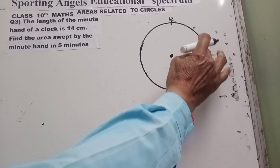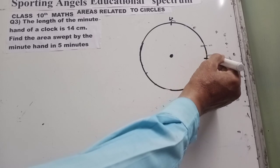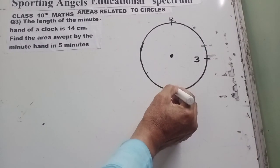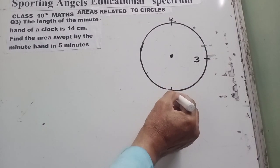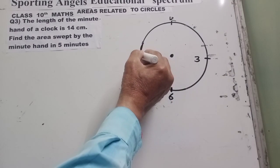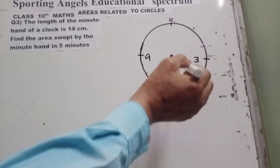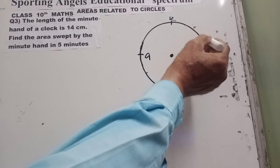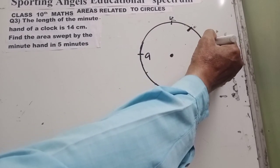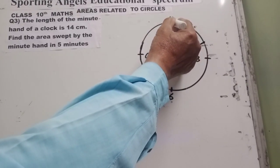Then this should be 3. And this should be 6. Let me mark this as 9. And if I can take here somewhere 1 and 2. And this is your minute hand.